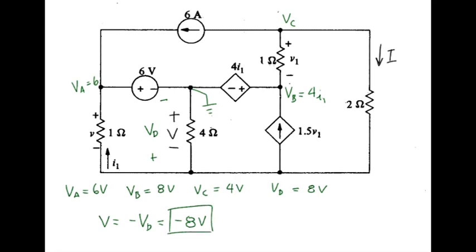The other thing we're looking for, that is the current I, can be found as the voltage across the 2 ohm resistor divided by 2, and that leads to minus 2 amps.